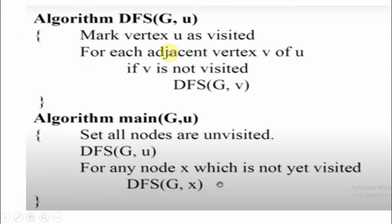This is the DFS algorithm. In it, you will mark a particular vertex u as visited — that is your starting vertex. Next, we will find all adjacent vertices v of u. For each vertex v of u, if v is not visited, then we will call DFS recursively.